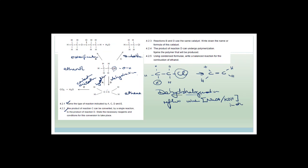Reactions B and D use the same catalyst — write down the name or formula. That's sulfuric acid, H2SO4. The reason is that it removes water, so it is a catalyst but also a dehydrating agent. The product of reaction D, ethene, can undergo polymerization. Since this requires a double bond, the type is addition polymerization, and since this is ethene, the polymer would be polyethene.